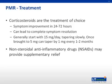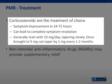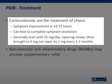In terms of treatment, corticosteroids are the treatment of choice and are usually extremely effective. Patients generally have significant relief within one to three days, and many will report complete resolution of symptoms. We generally start with 15 milligrams of prednisone per day and taper down slowly over the course of six to nine months. Once the patient has tapered down to five milligrams, we then taper the prednisone by only one milligram a month, as tolerated.